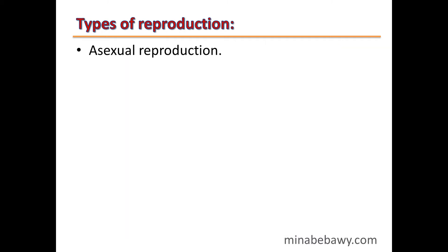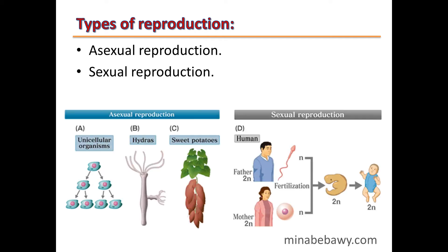There are two types of reproduction. The first one is asexual reproduction. The second type is sexual reproduction.